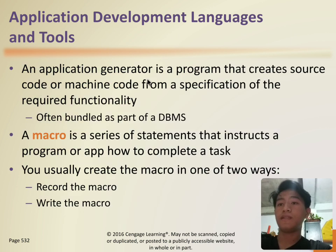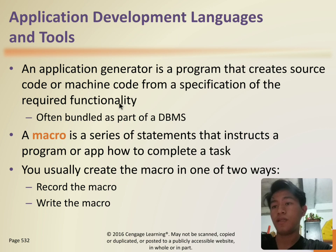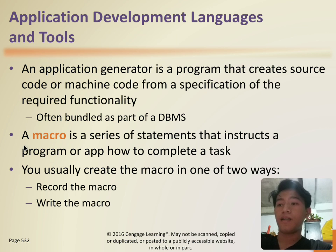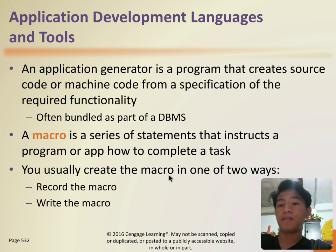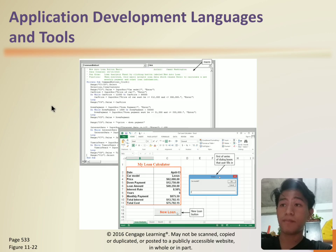An application generator is a program that creates source code or machine code from a specification of the required functionality, often modeled as a DBMS. A macro is a series of statements that instruct a program on how to complete a task. You can usually create a macro in one of two ways: you can record it or write it.